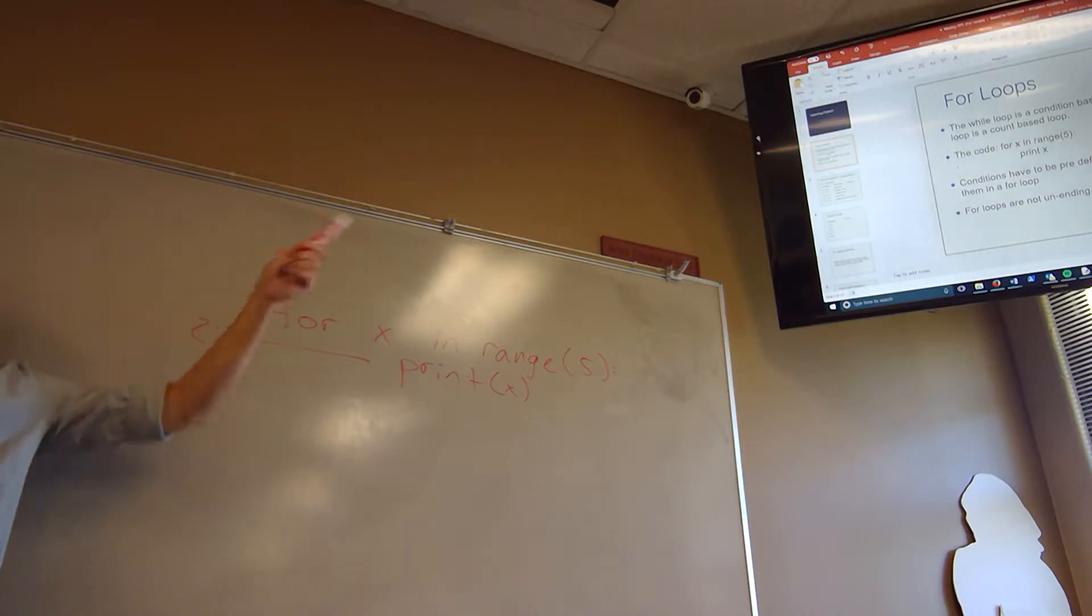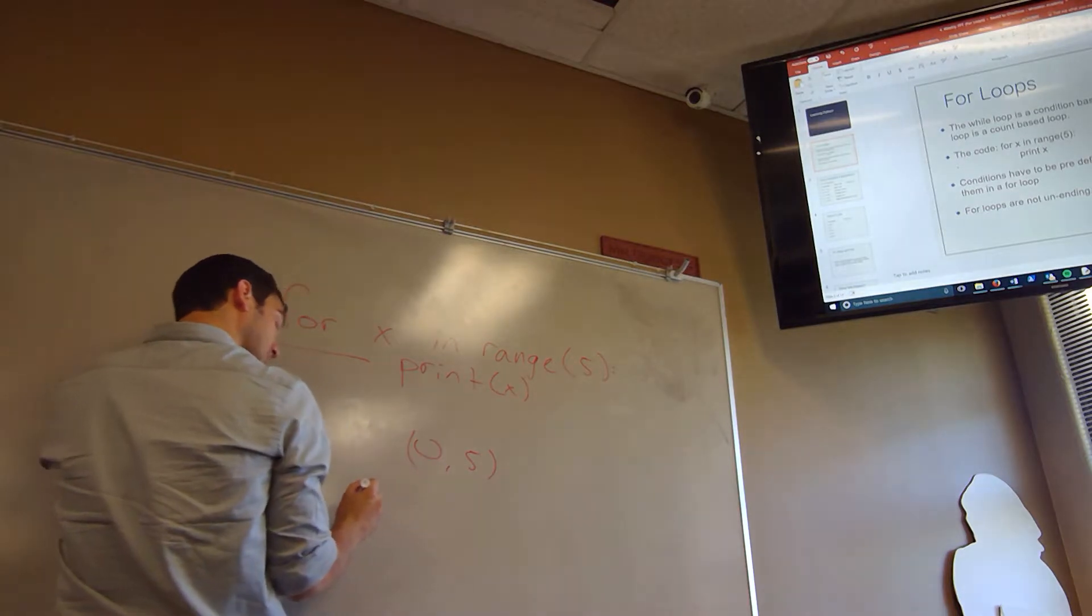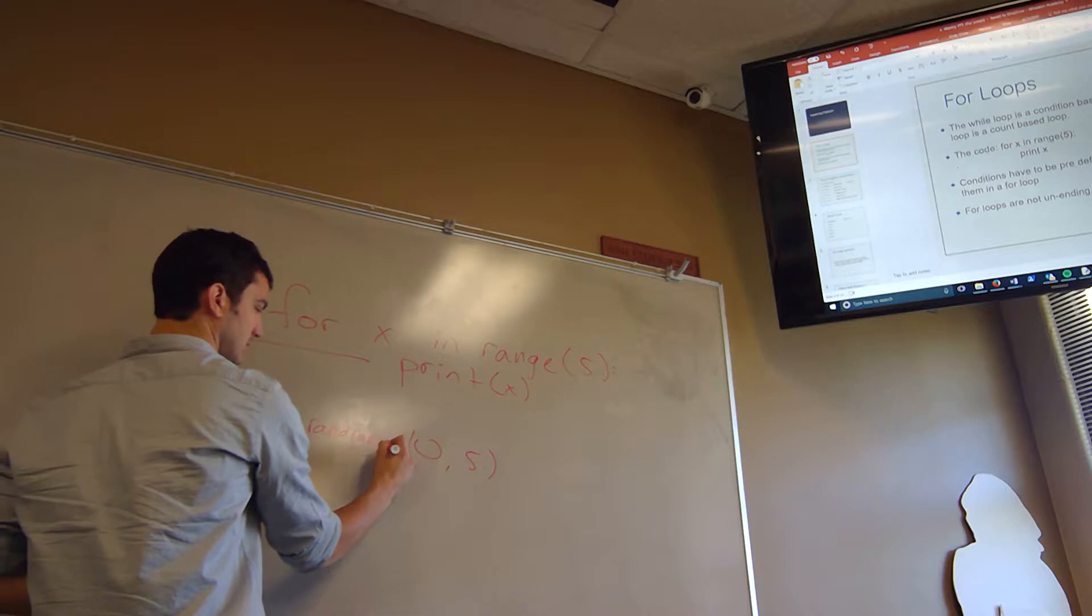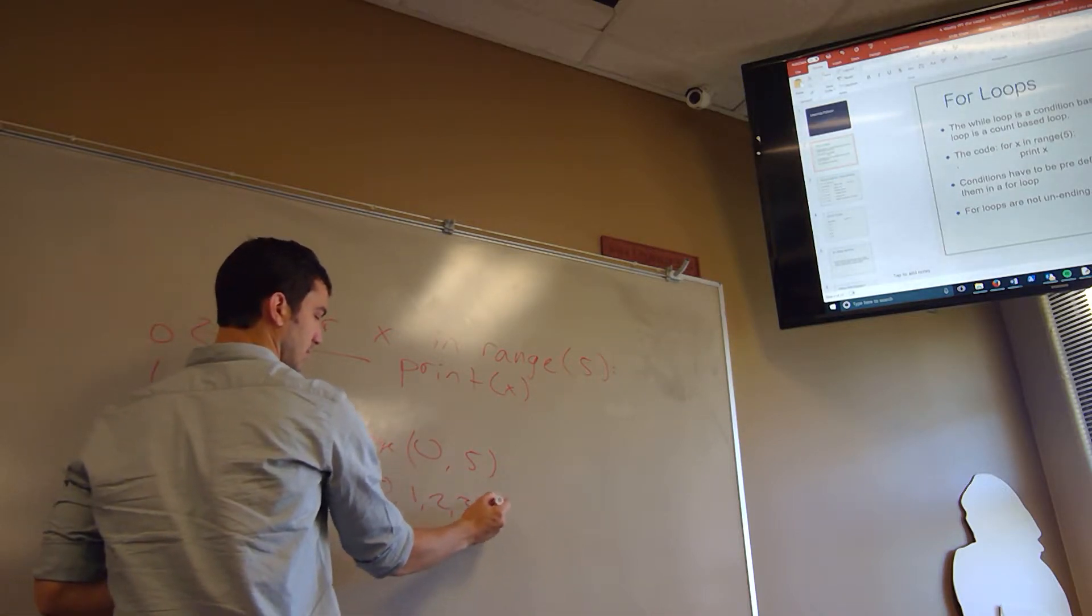So what happens is print x. It's going to print a 0, 1, 2, 3, and 4. Remember how I said in rand range, if you have 0 to 5, the numbers that will choose, so if this is rand range, you're going to get 0, 1, 2, 3, 4.